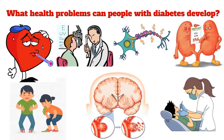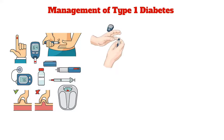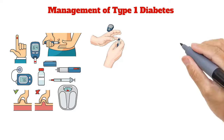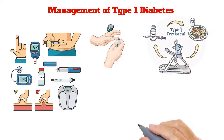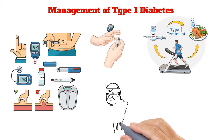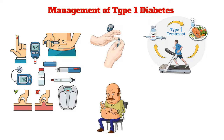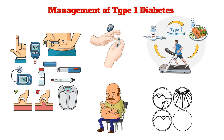Management of type 1 diabetes requires daily insulin treatment, regular blood glucose monitoring, and a healthy lifestyle. People with diabetes who require insulin need to check their blood glucose levels regularly to inform insulin dosage, and are usually advised to measure blood glucose levels at least four times a day.